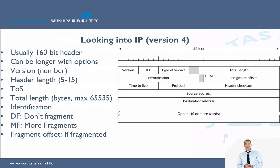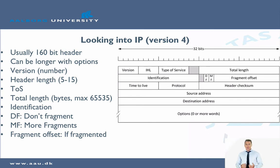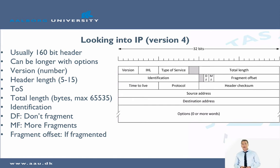Looking at the content of the header, there is a version field which tells which version of IP we are using — this will usually be version 4. Then there is the header length, defined as the number of words or lines, so the usual value here would be 5 for the 160 bits. Then you have the TOS, the type of service, which can be used for quality of service but in reality is not often used. And then you have a total length which includes both the header and the payload.